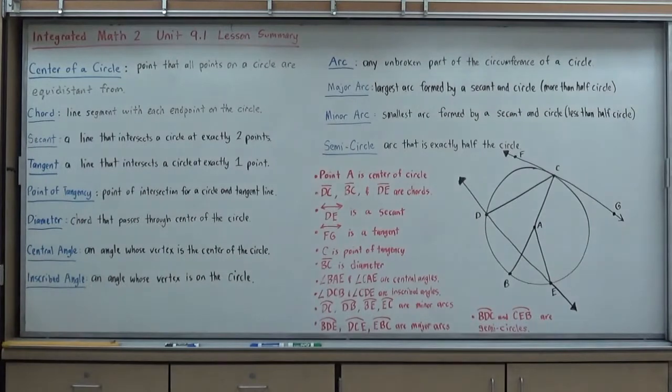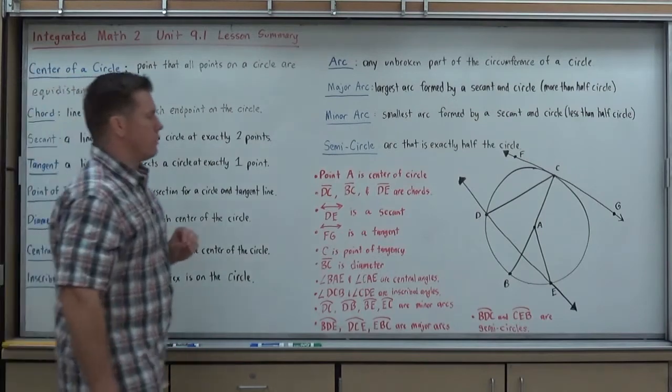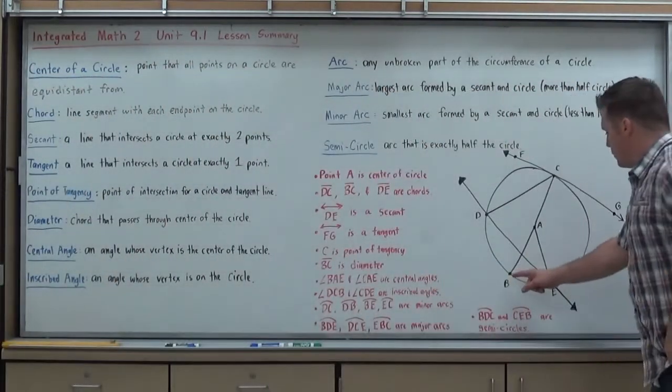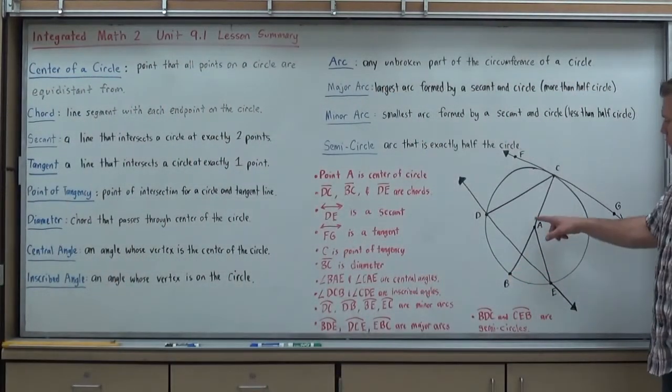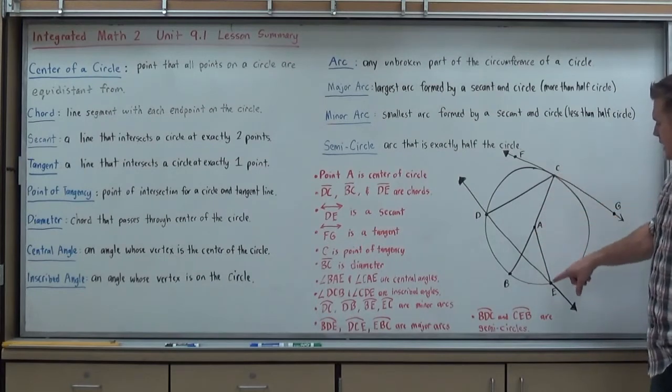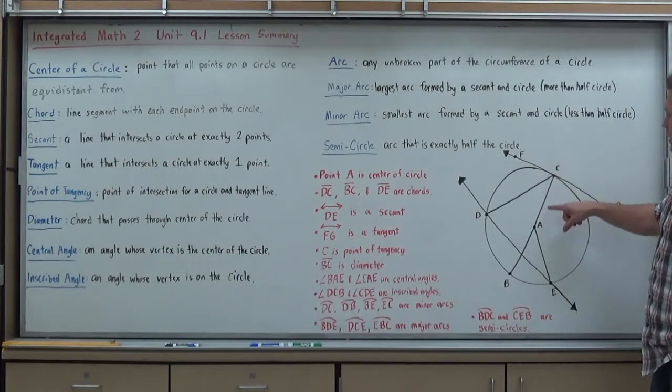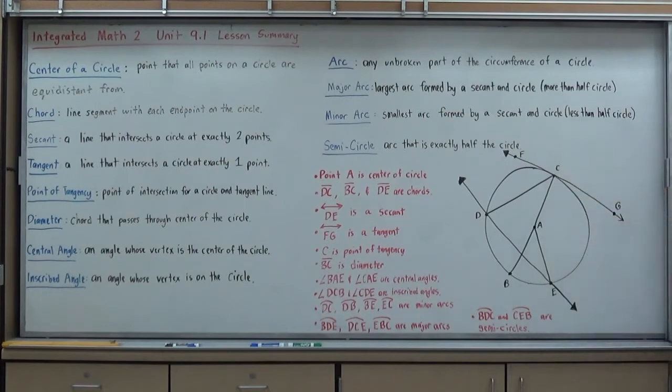New to you for sure in this chapter will be some of the angle rules here with circles. The first type of angle we're going to deal with is a central angle. It's called a central angle because its vertex is in the center of the circle. The center point of the angle is the center of the circle. So BAE is a central angle. CAE is a central angle. Those are the two you see in this diagram. They're central angles because they're formed from the middle of the circle.